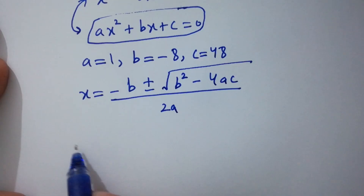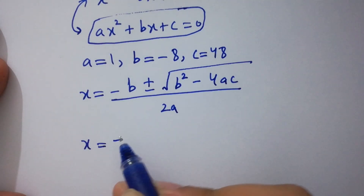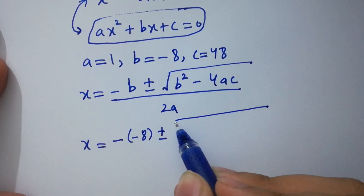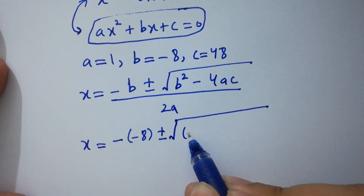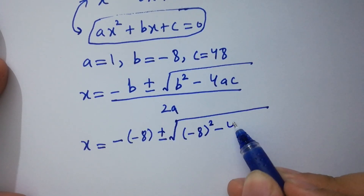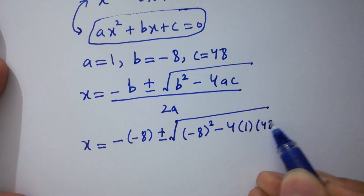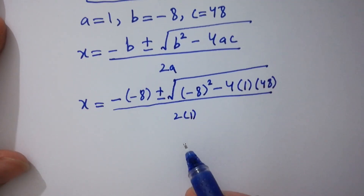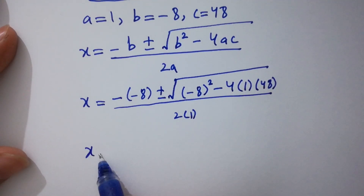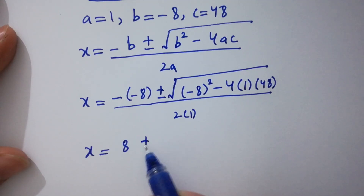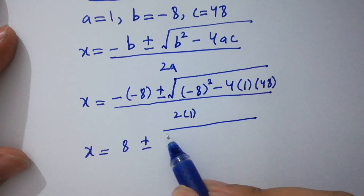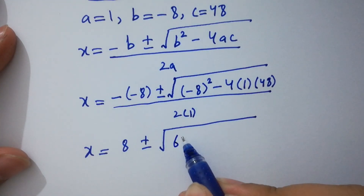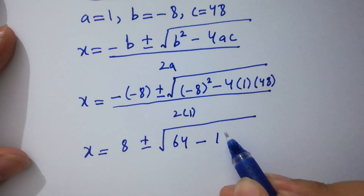Substituting the values: x equal to minus (minus 8) plus or minus square root of (minus 8) squared minus 4 times 1 times 48, over 2 times 1. This gives x equal to 8 plus or minus square root of 64 minus 192.